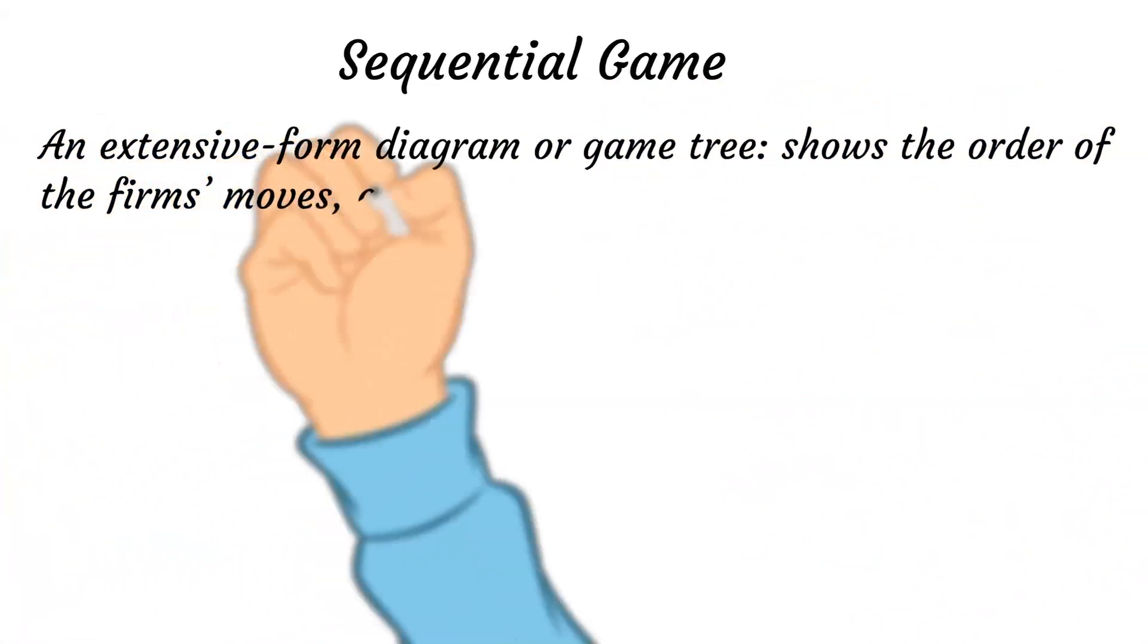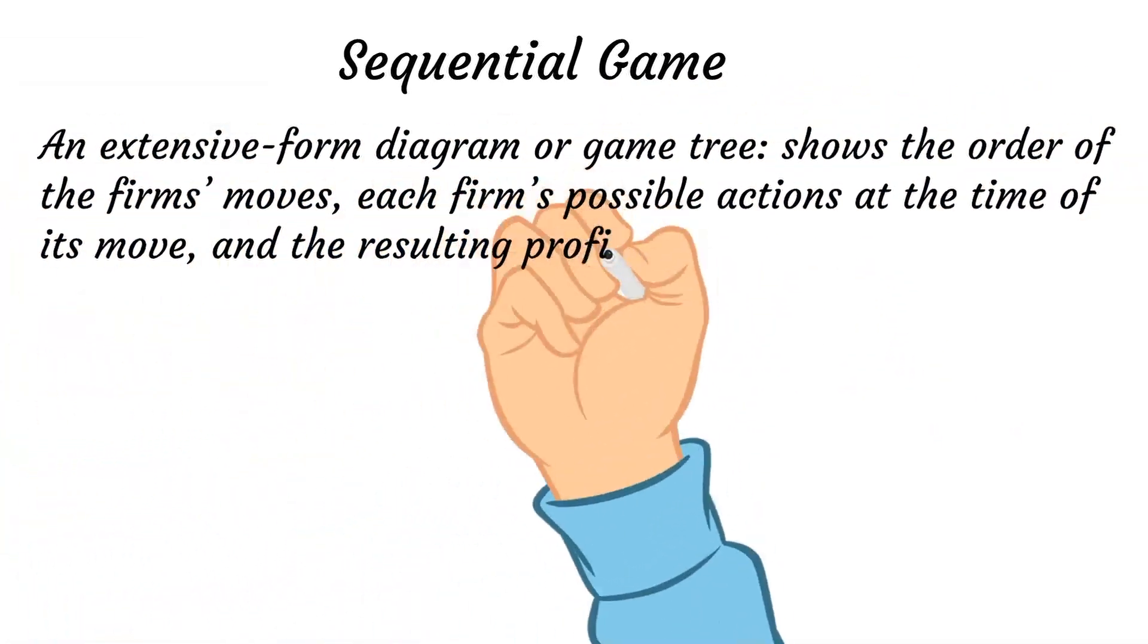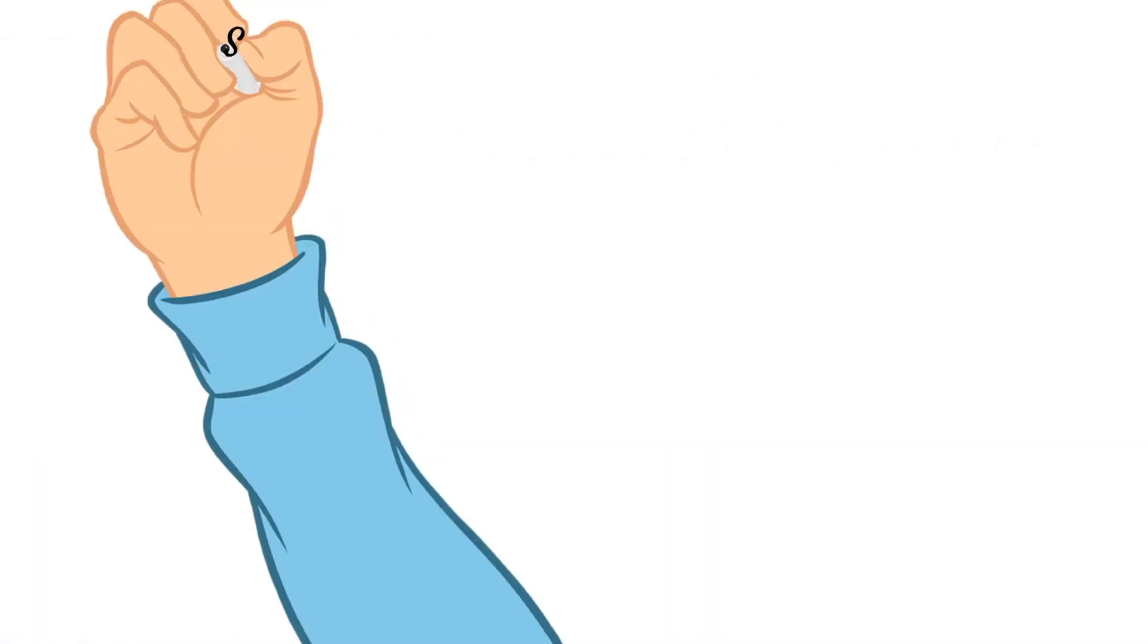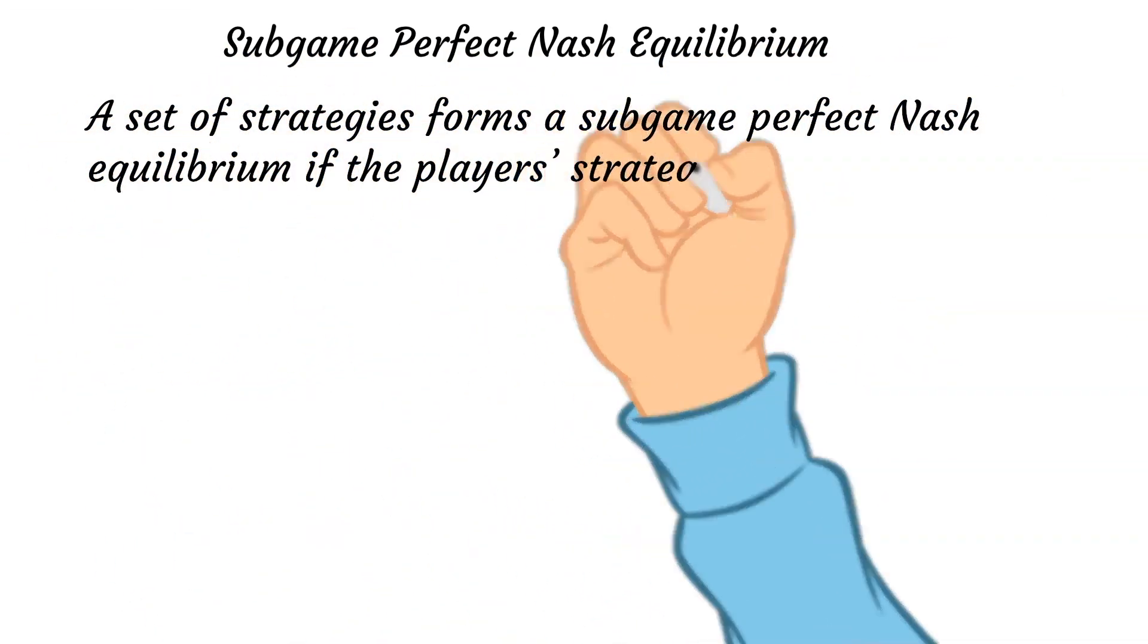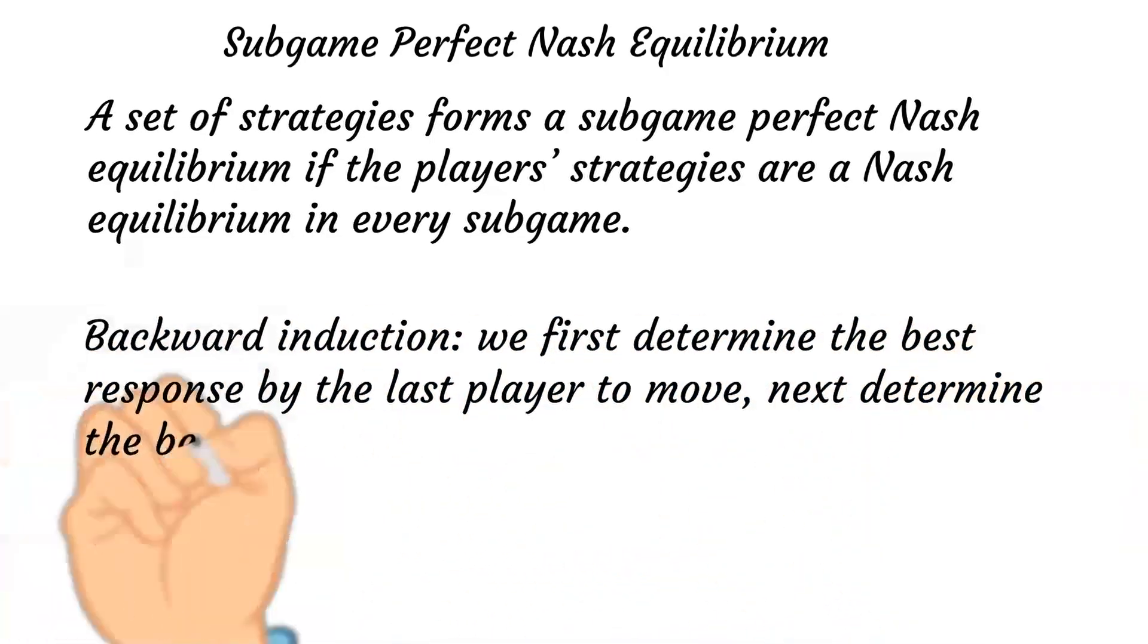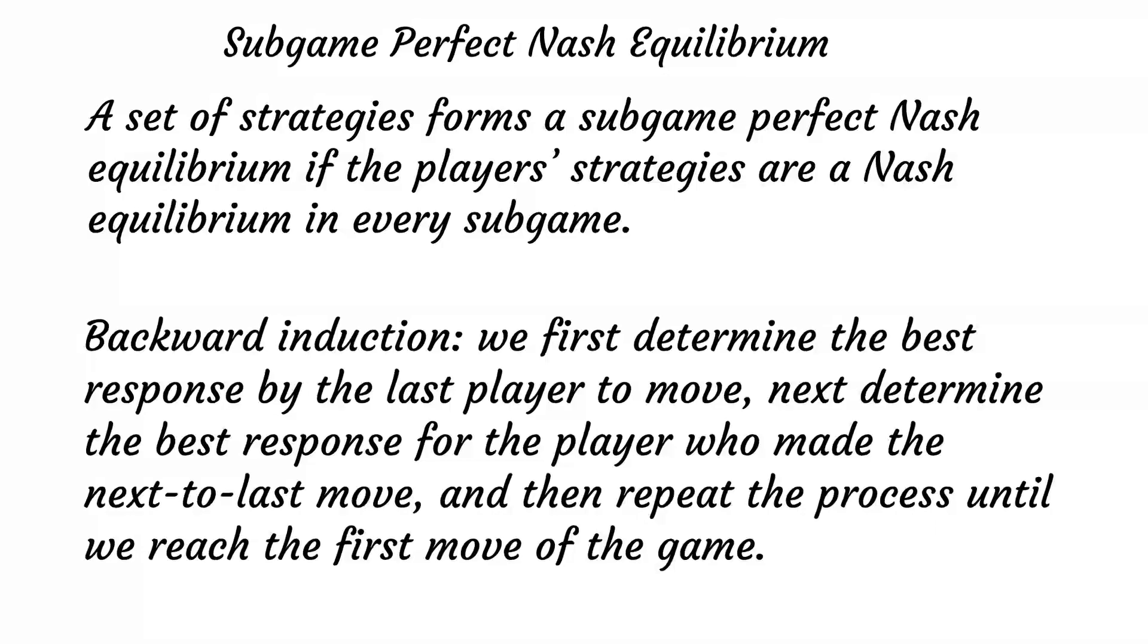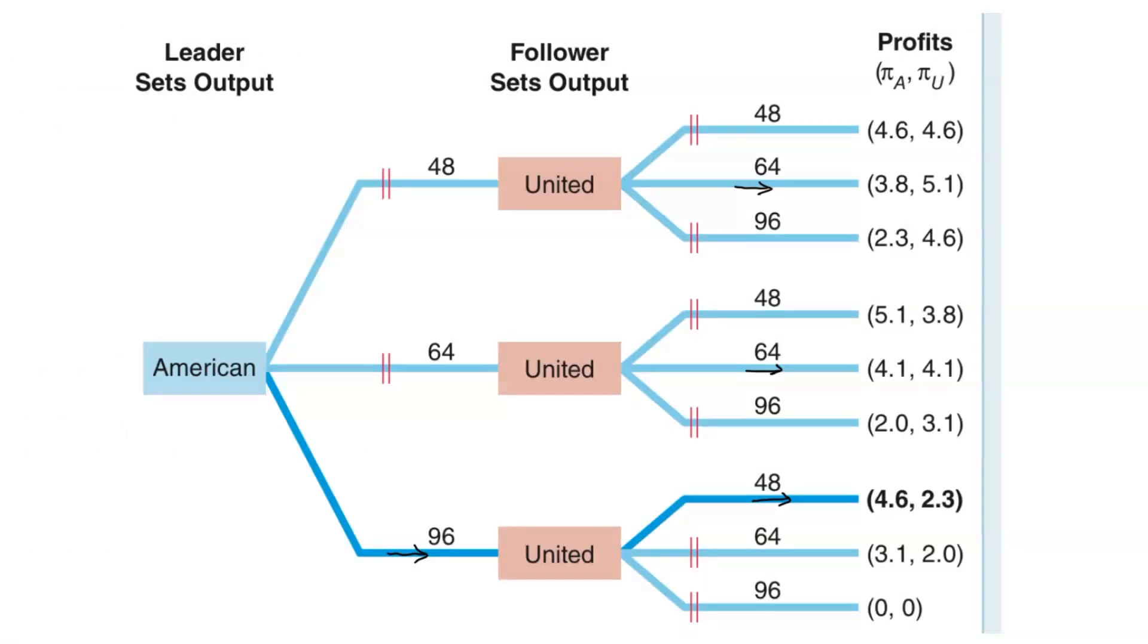In a sequential game, we can use an extensive form diagram or game tree to show the order of the firm's moves, each firm's possible actions at the time of its move, and the resulting profits at the end of the game. A set of strategies forms a subgame perfect Nash equilibrium if the player's strategies are Nash equilibrium in every subgame. We can solve for the subgame perfect Nash equilibrium using backward induction, where we first determine the best response by the last player to move, next determine the best response for the player who makes the next to last move, and then repeat the process until we reach the first move of the game.